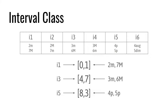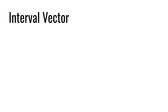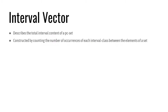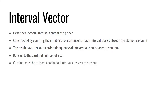So, as you see, in set theory, the direction of the interval — up or down — is meaningless. The next concept is called interval vector. It is a way of describing the total interval content of a PC set, and is constructed by counting the number of occurrences of each interval class between the elements of a set, and writing the results in an ordered sequence of integers without spaces or commas. The interval vector is related to the cardinal number of a set, which must be at least four so that all interval classes are present.